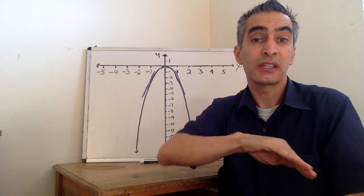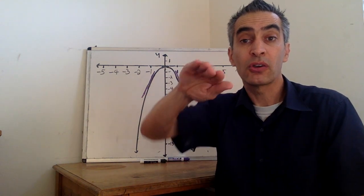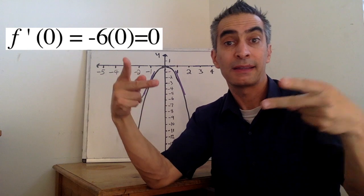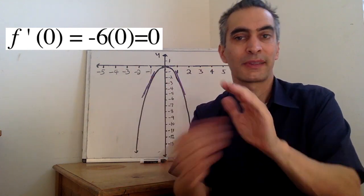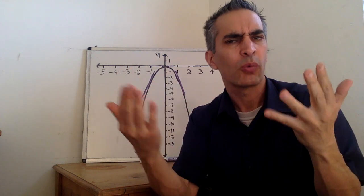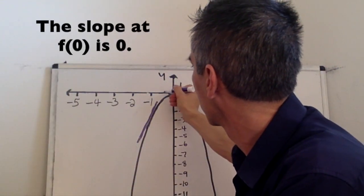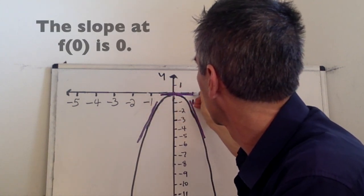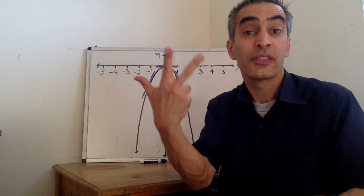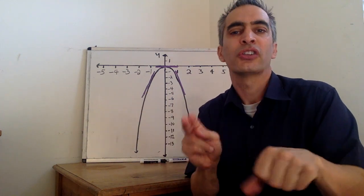Maybe you want to calculate the slope if x equals 0, right here. f prime at 0 equals negative 6 times 0, which equals 0. You can see three different slopes — all of them are different, all of them calculated using the Power Rule.